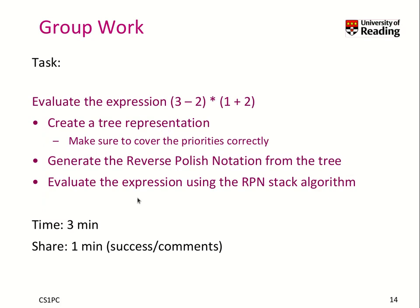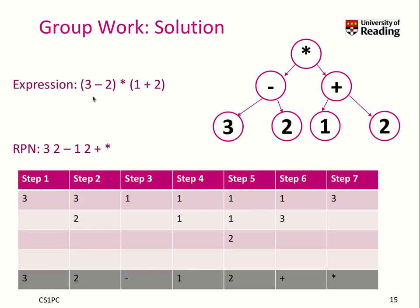Welcome back. I hope you were able to evaluate the expression using reverse Polish notation. Here is the solution. Our expression was 3 minus 2 times 1 plus 2. On the leaves we always find the numbers: 3, 2, 1, and 2. We organize the inner nodes: 3 minus 2 on the left side, 1 plus 2 on the right side, and we multiply those two results. Performing the algorithm gives a result of 3.